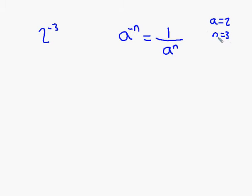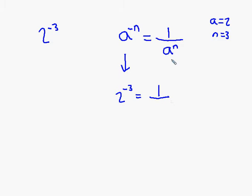By letting a be 2 and n be 3, this part of the general property becomes: replace a with 2, and because of the minus sign, replace n with 3 to get minus 3. That gives me the question that was posed — 2 to the minus 3 — and then my property says that can be written as 1 over a to the n, where a is 2 and n is 3.